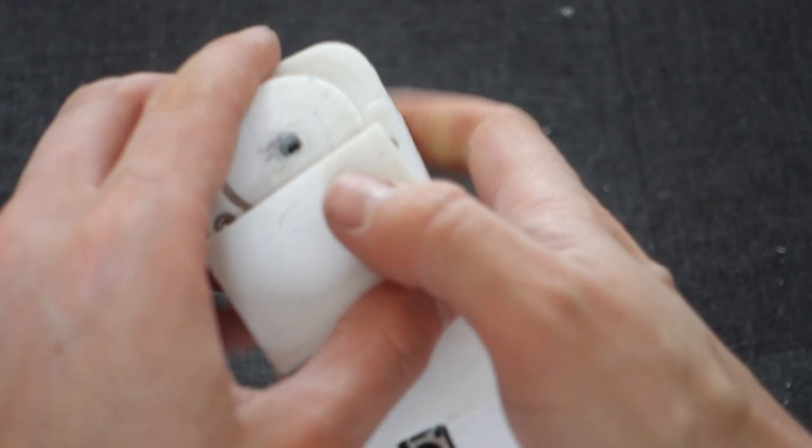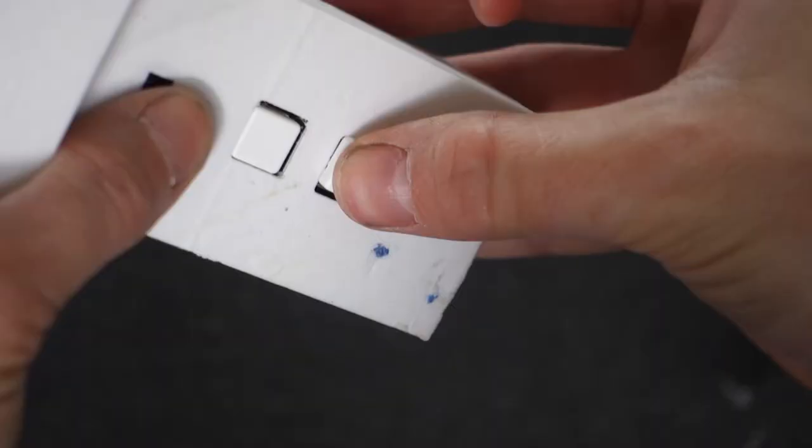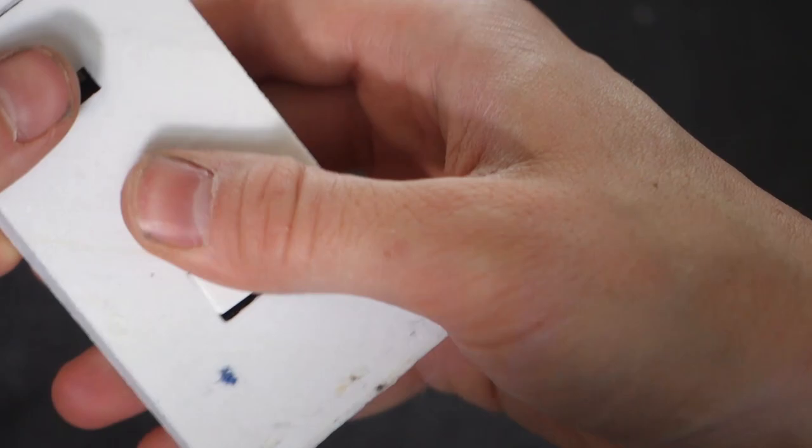Snap the gear cover in place. Finally push 2 button covers over the buttons to complete the unit.